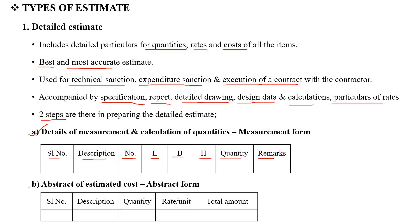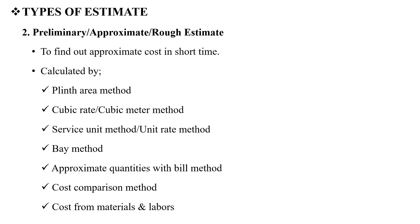The next step is the abstract of estimated cost. This includes the abstract formula, tabular column, descriptions, quantity, unit, and total amount.